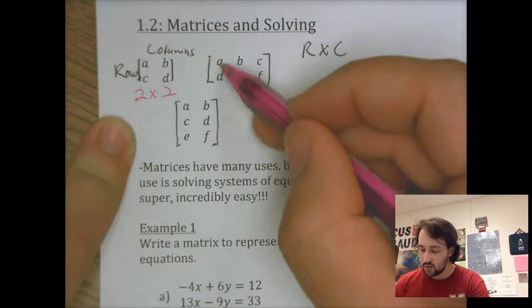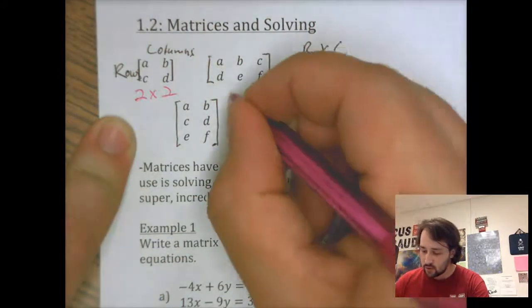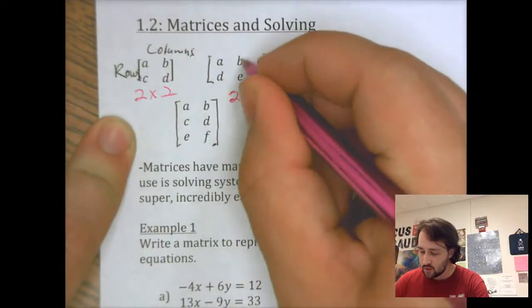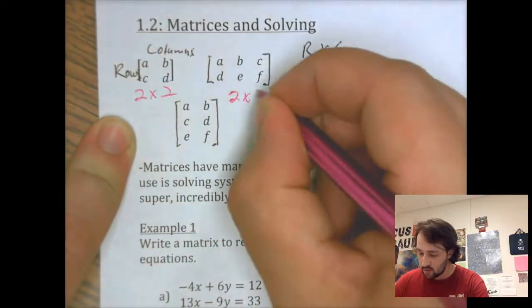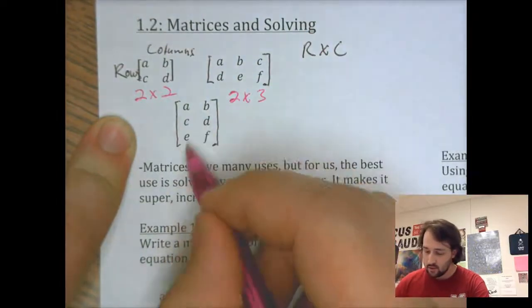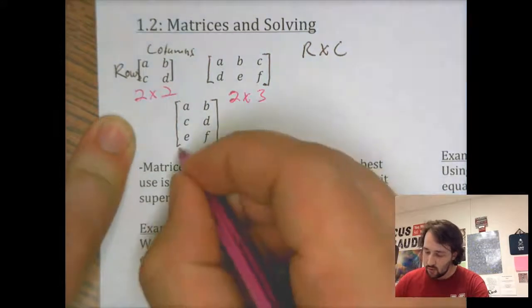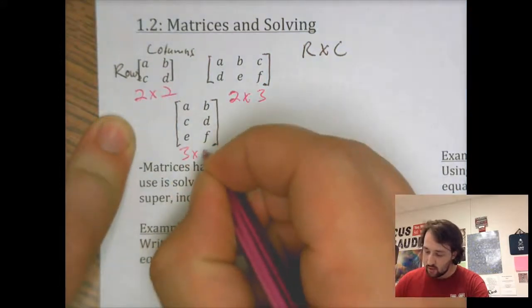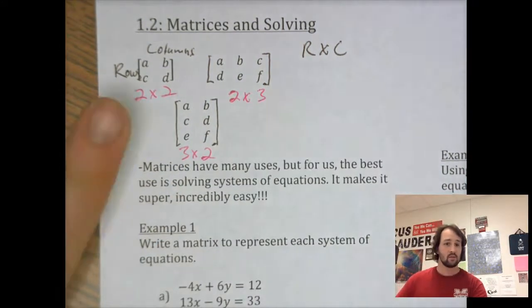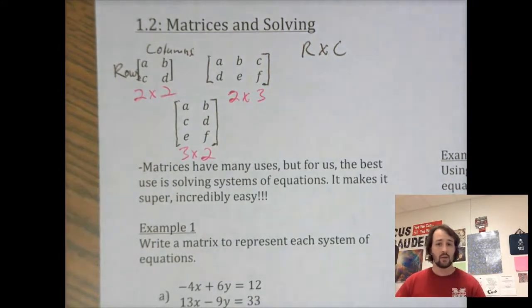This one has two rows and three columns, so it's a two-by-three. This one is a three-row by two-column matrix. So it's just however many rows by columns it has.